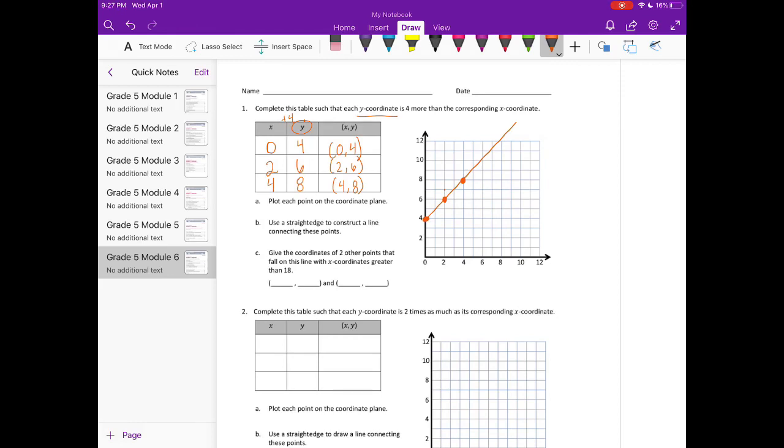Use a straight edge to construct a line connecting these points. Give the coordinates of 2 other points that fall on this line with x-coordinates greater than 18. If I choose an x-coordinate of 20, remember my rule was plus 4, the y would be 24. If I choose an x-coordinate of 31, 31 plus 4, my y would be 35.